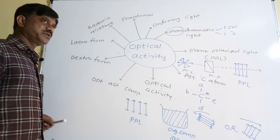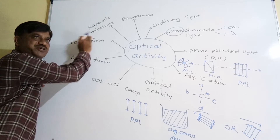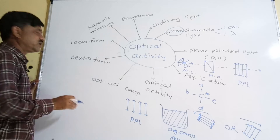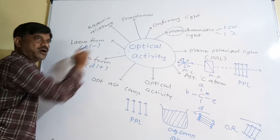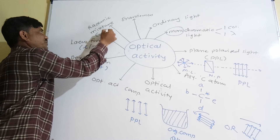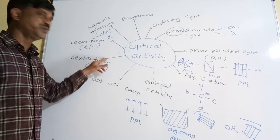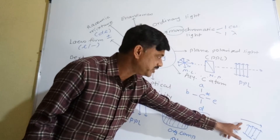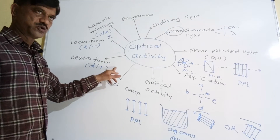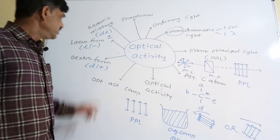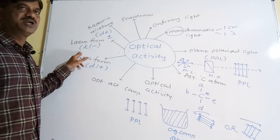Next, dextro form and leo form, then racemic mixture and enantiomers. In case of dextro form, the symbolic notation is D or plus. In case of leo form, the notation is L or minus. For racemic mixture, the notation is DL or plus-minus form. The dextro isomer is that isomer of the compound which rotates the plane of PPL towards the right-hand side. The leo form is that isomer which rotates the plane of PPL towards the left-hand side, denoted by L or minus form.